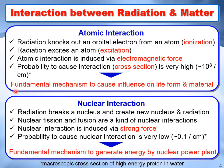On the other hand, radiation breaks a nucleus and creates new nuclei and radiation by nuclear interaction. Nuclear fission and fusion are kinds of nuclear interactions. Nuclear interaction is induced via strong force that can only reach a short distance. Therefore, the probability to cause nuclear interaction is very low, approximately 0.1 times per centimeter. This is the fundamental mechanism to generate energy in a nuclear power plant.